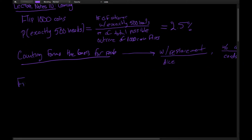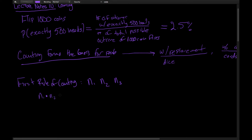This brings us to the first rule of counting. Suppose you have a certain number of decisions to make — let's say three. There are n1 ways to make the first decision, n2 ways to make the second, and n3 ways to make the final decision. The first rule of counting says the total number of ways to make all decisions is n1 times n2 times n3. You can generalize this to k decisions.